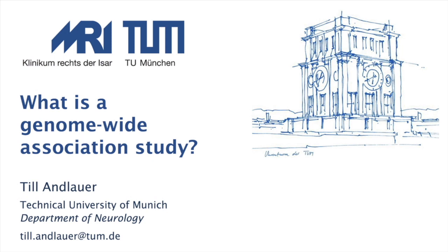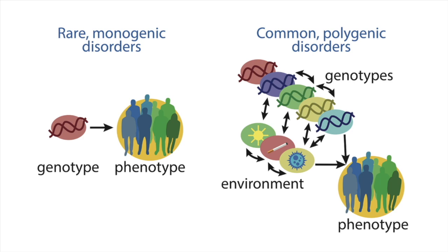So first, you need to consider that complex disorders like most psychiatric disorders are polygenic. So we don't have single causal mutations that confer risk, as is the case for monogenic disorders, but many genetic variants with small individual contributions to disorder risk.